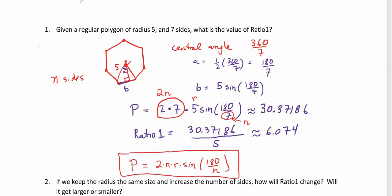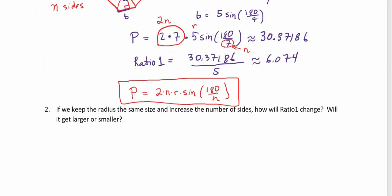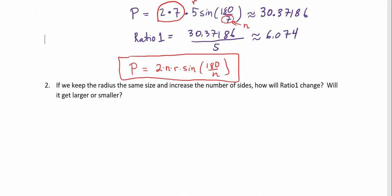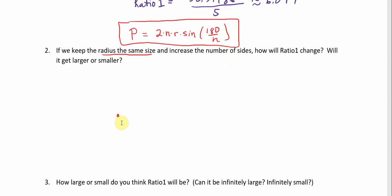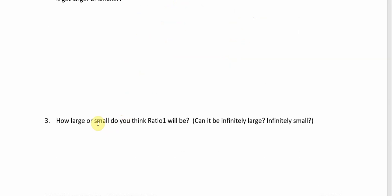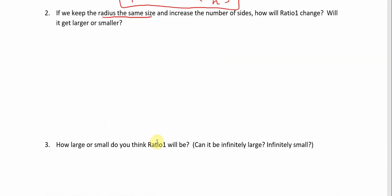Now, these next couple questions, I'd like you to answer them on your own. Just kind of thinking about it a little bit, if we keep the radius the same size, and we just increase the number of sides, how will this ratio change? And you can use this formula here to help you think it through. And then, think about whether it's going to get bigger or smaller, and then how big or how small can it be? And answer that as best you can, and then we'll continue on with the next video.